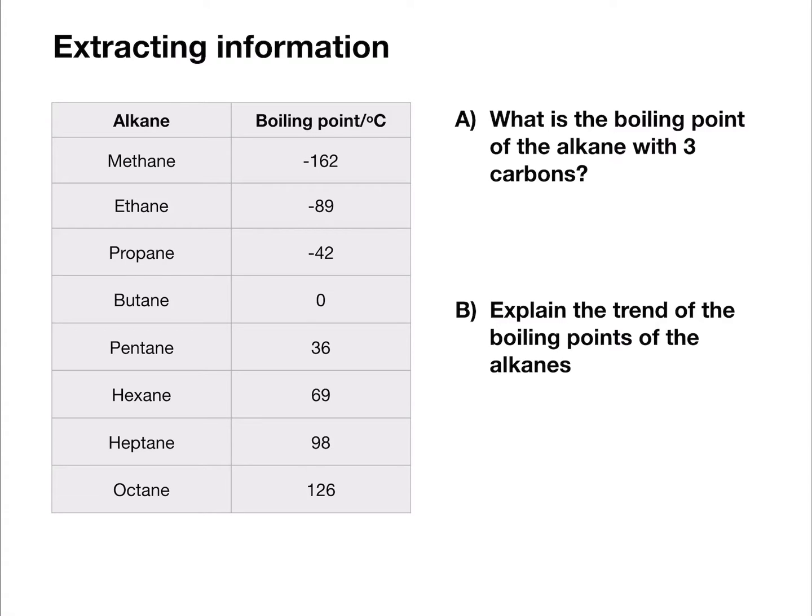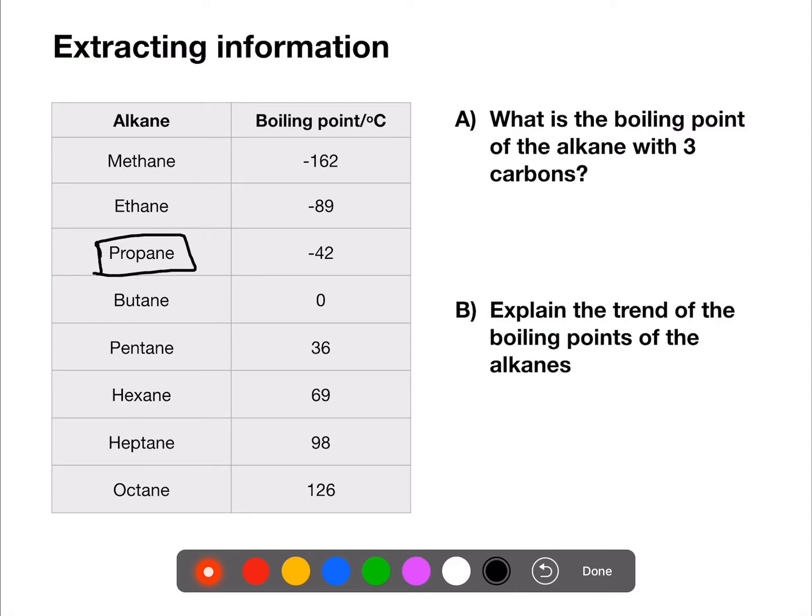The alkanes are written in order from one carbon to eight carbons. The alkane with three carbons is propane. We can see from the table that the boiling point is negative 42 degrees Celsius.